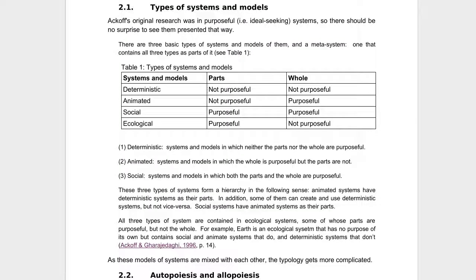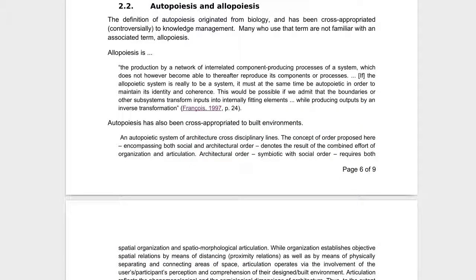We have a few topics here — types of systems and models — from Russell Ackoff. A deterministic system is not purposeful: a machine doesn't choose to be a machine. An animated system: your heart doesn't choose to be a heart, but we as animated beings can choose what we do — we have human will. Social systems: we as individuals have choice, we as a group have choice. And then ecology: we can influence parts of the ecology, so you may be able to influence one lake, but try to influence the whole world. That's part of the foundational stuff within systems theory.